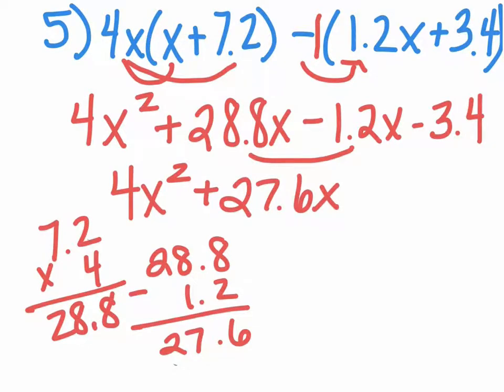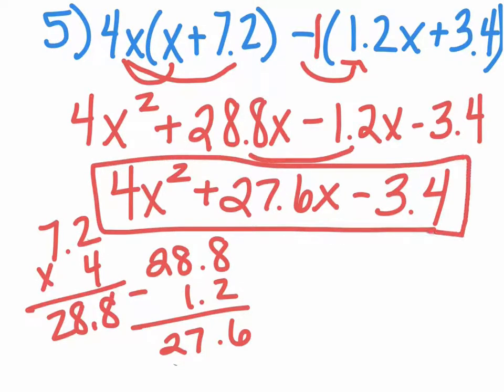And then my constant is negative 3.4, and there's no other constant numbers. So that is your final answer.